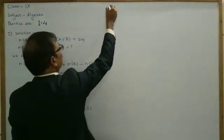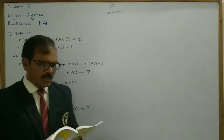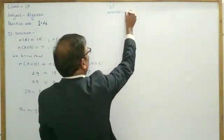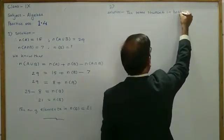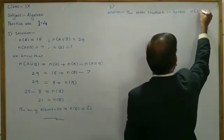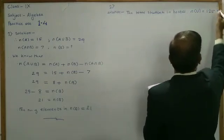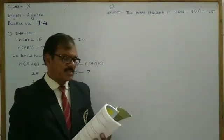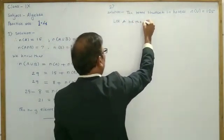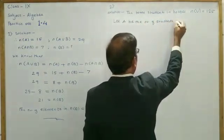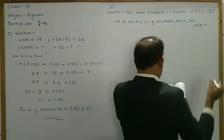Now see the second problem. In a hostel there are 125 students — means the total students in hostel, that is n(U), is equal to 125. Second, out of which 80 students drink tea. Let A be the set of students who drink tea. Therefore, n(A) is equal to 80.